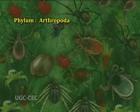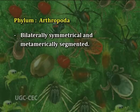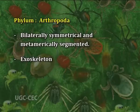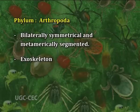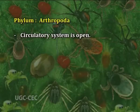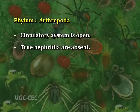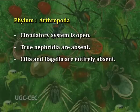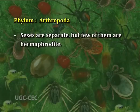Various characters of phylum Arthropoda are: 1) body is bilaterally symmetrical and metamerically segmented; 2) externally the body is covered with a thick, tough, non-living, chitinous and protective cuticle forming the exoskeleton; 3) appendages are segmental, paired, lateral and jointed, variously modified as jaws, gills, legs, etc.; 4) circulatory system is open; 5) true nephridia are absent; 6) cilia and flagella are entirely absent; 7) sexes are separate, but few of them are hermaphrodites.